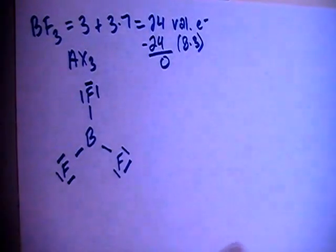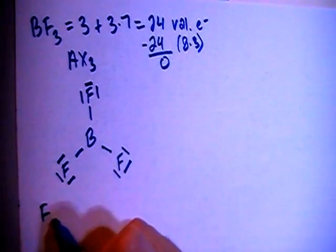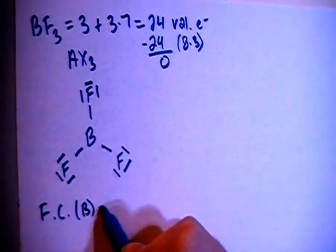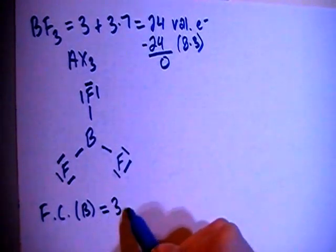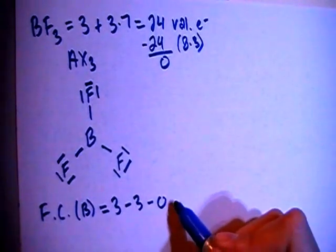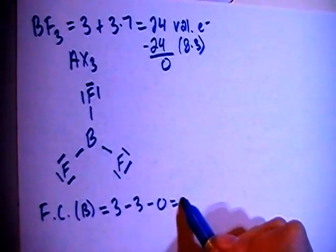We can go ahead and check the formal charges now just to verify. So the formal charge on the boron is going to be the 3 valence brought in, minus 1, 2, 3 bonds, minus 0 non-bonding electrons for a formal charge of 0.